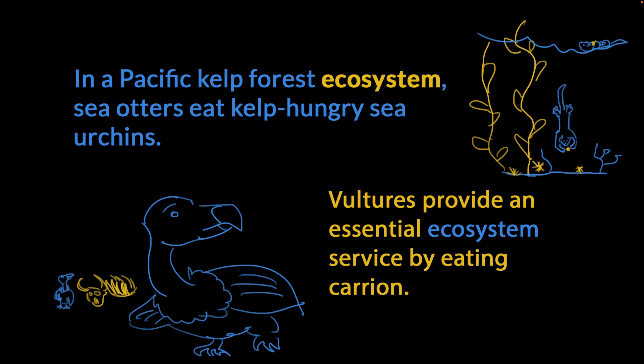Here's another one. Vultures provide an essential ecosystem service by eating carrion, by eating dead things. I realize now that my vulture looks more like a dodo. I love the fluffy ruff that vultures have at the base of their necks. Vultures are contributing to the functioning of the ecosystem by eating carrion. You're a part of it too, by the way. You're part of an ecosystem of learners and knowledge and rocks and moss and vultures and otters and sea urchins and bugs and monkeys. You're connected to it too. And may that knowledge give you strength. You can learn anything. David out.